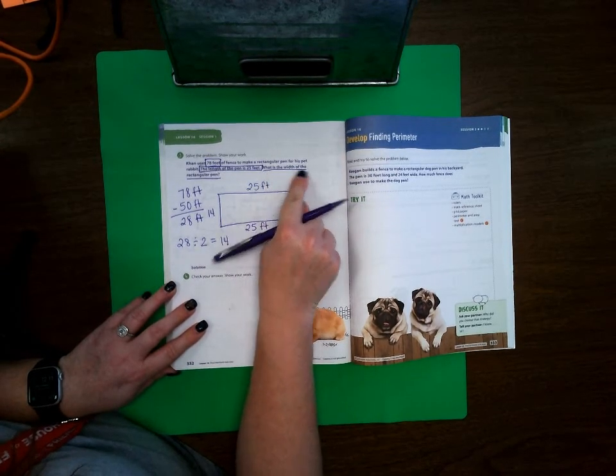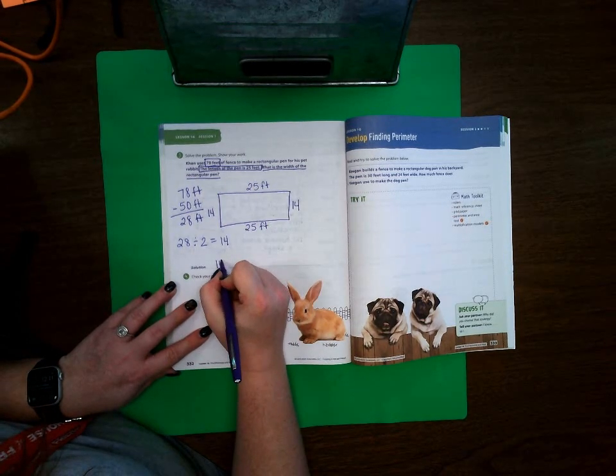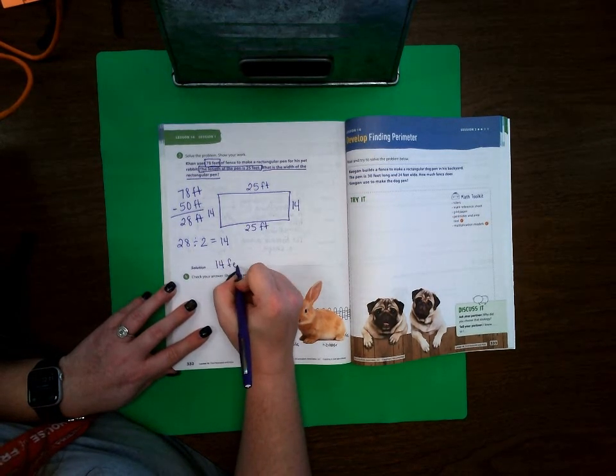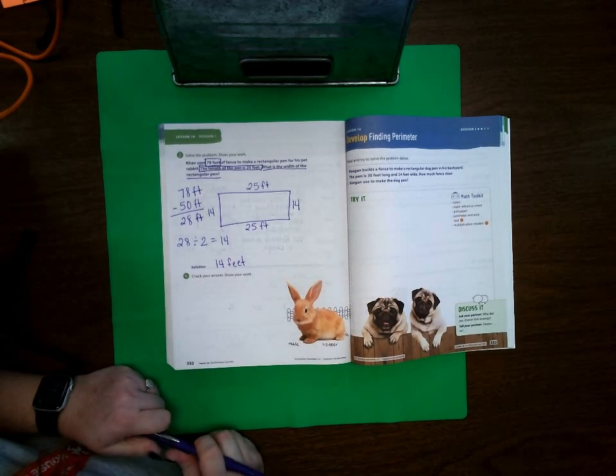And the question is, what is the width of the rectangular pen? Well, it is 14 feet. That is it for lesson one. I will see you back for lesson two.